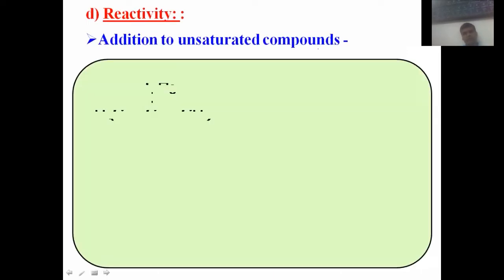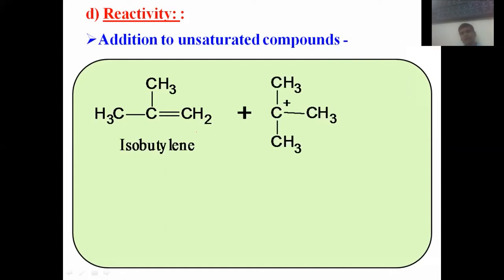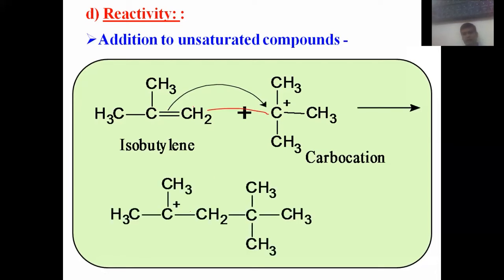The next reaction type is addition to an unsaturated compound. Consider the example of isobutylene — CH3C(=CH2) — which is an unsaturated compound. When it comes in contact with a carbocation (an electrophile), the carbocation can add to the C=C double bond. A new bond forms between the terminal carbon and the positively charged carbon, generating a new species in which another carbon acquires a positive charge — giving a new carbocation. Carbocations can thus add to C=C double bonds or C≡C triple bonds to give the corresponding intermediates.